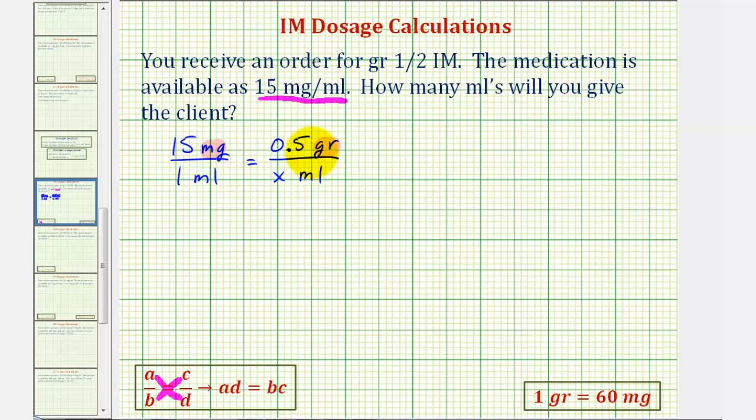But let's show how we can do this conversion using a separate proportion. To convert grains to milligrams, we'll use this conversion as our first ratio. One grain is to 60 milligrams as 0.5 grain is to an unknown number of milligrams, which we'll call Y milligrams. Notice the units on top are the same, the units on the bottom are the same. So we can cross multiply and solve for Y.